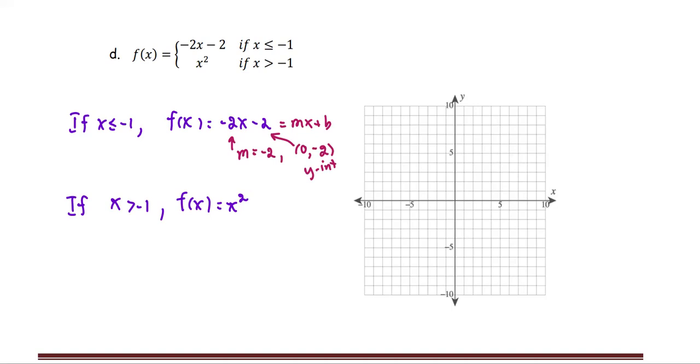And then the second part, f of x equals x squared. So this is the parabola. The graph will look like a u-shaped graph like this. Now we're going to put them together in one xy-plane.